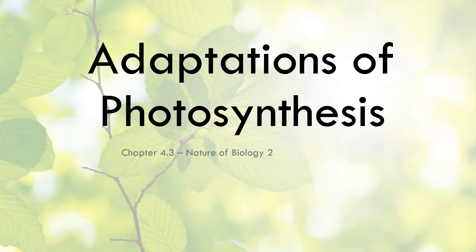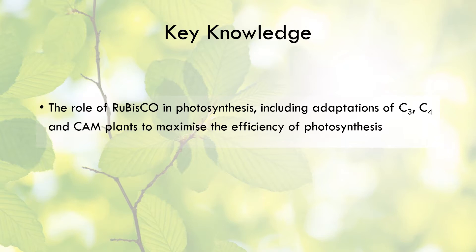Today we're looking at adaptations of photosynthesis - chapter 4.3 of your textbook. The key knowledge study dot point you need to know is the role of Rubisco in photosynthesis, including adaptations of C3, C4, and CAM plants, enabling plants to maximize the efficiency of photosynthesis.